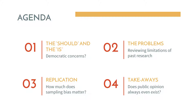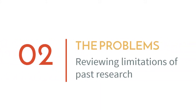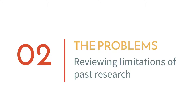Here is our agenda for not only this video but also for class on Thursday. In this video we will begin with thinking about the 'should' and the 'is' — what is the influence of public opinion on public policy, what should it be, what is it, and how strong is it? How does this all relate to democratic concerns about the effectiveness of democracy in the United States?